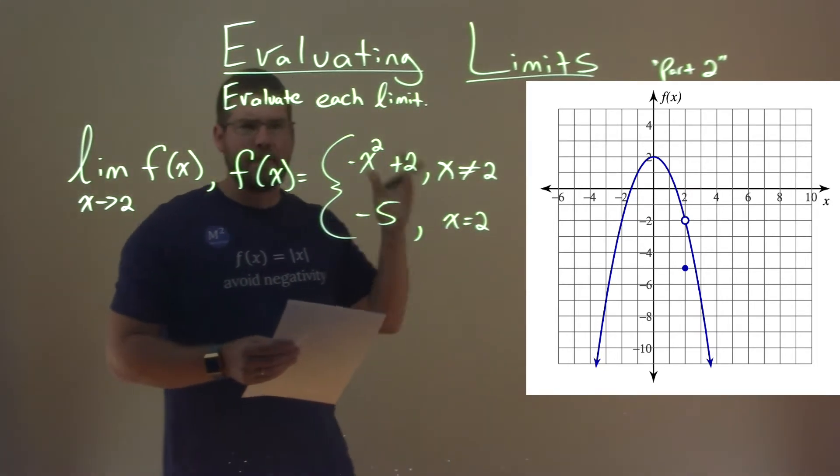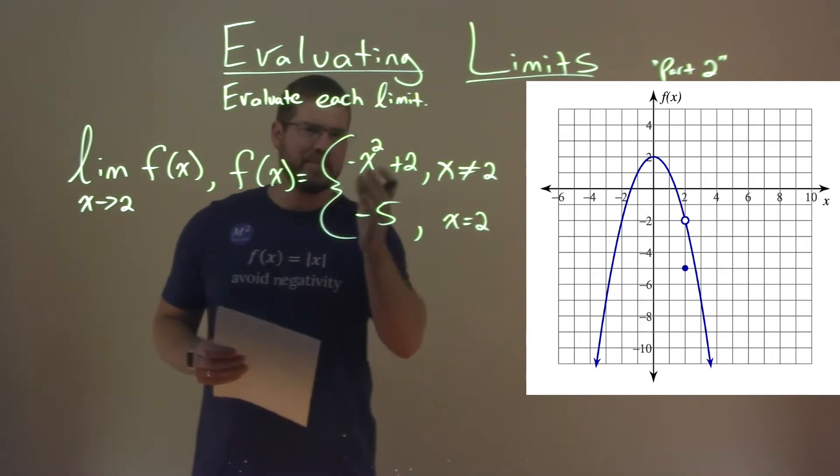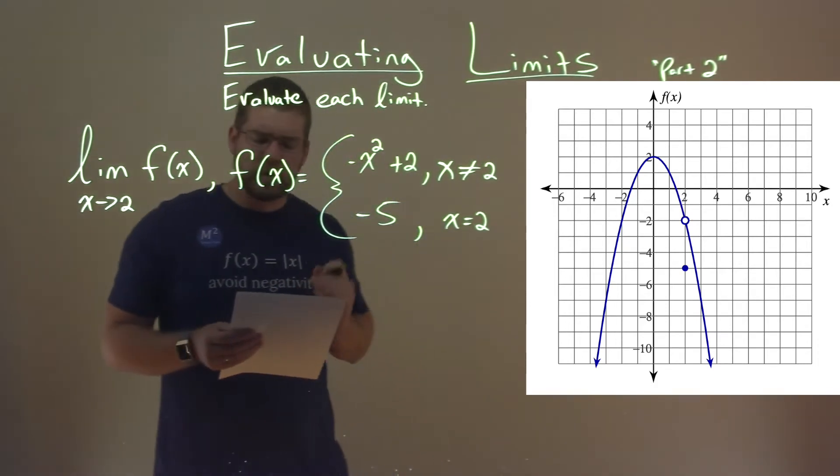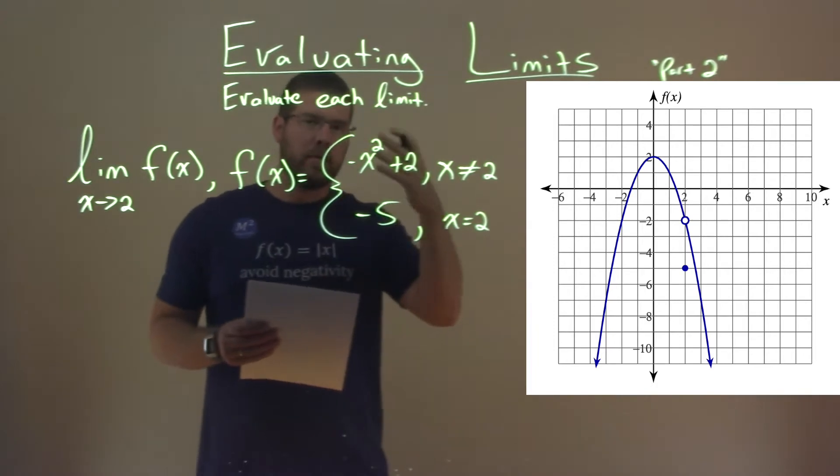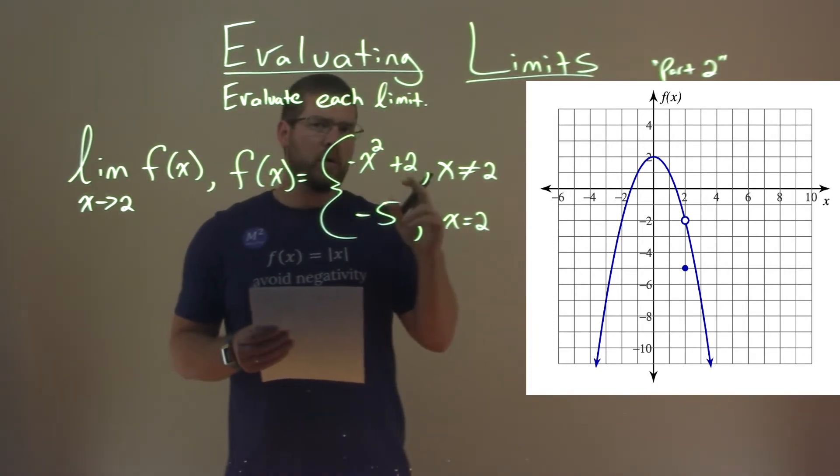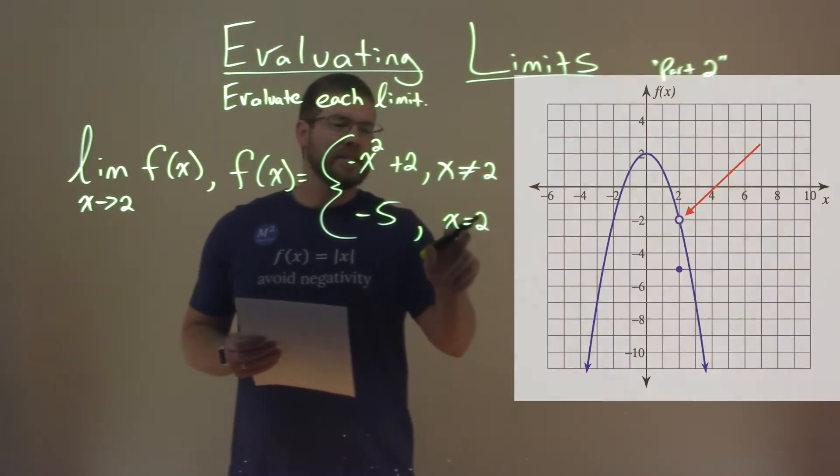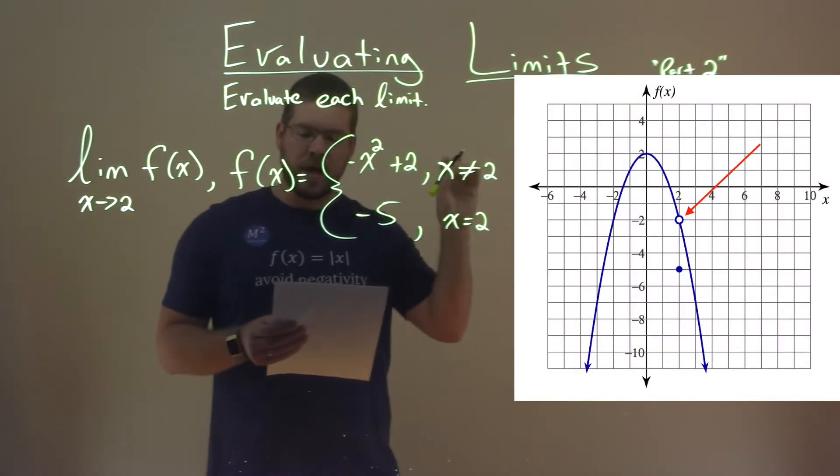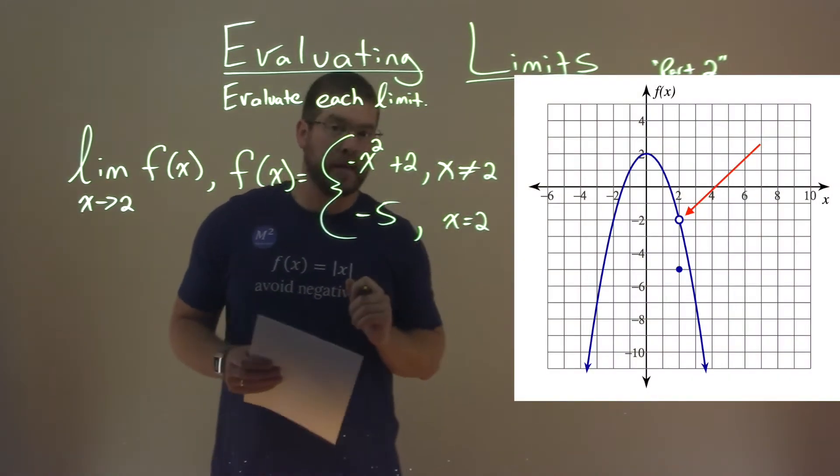So we have our graph right here that graphs this piecewise function. Notice on the graph we have a parabola, right? That's a frown in a way, but then there's an open hole right there where at x equals 2 it jumps down to a point where the y value is negative 5.